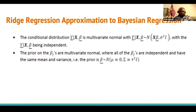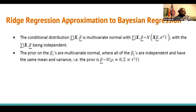We are back at Bayesian linear regression because we want to move from Bayesian linear regression to ridge regression. In Bayesian linear regression, the response variable as well as the parameters are actually going to be sampled from a normal distribution. So the conditional distribution of Y given X and beta — given the predictor and the regression parameter — is multivariate normal with mean X*beta and variance sigma²*I. And Y given X and the beta are assumed to be independent.